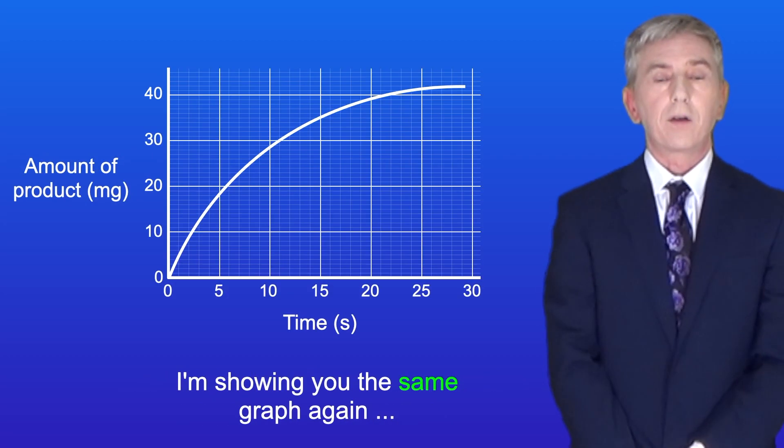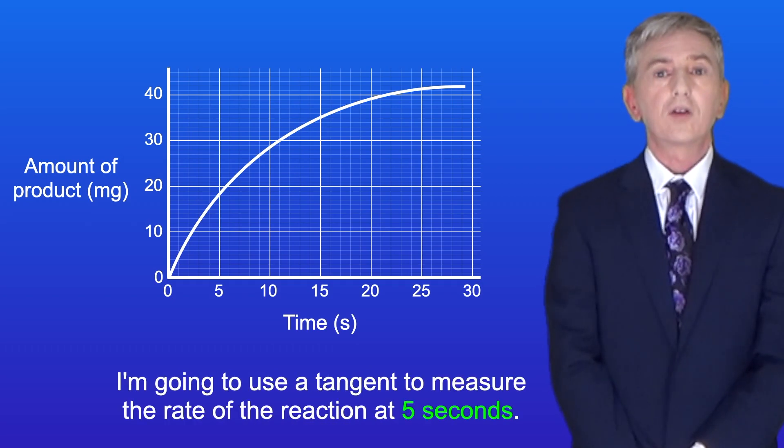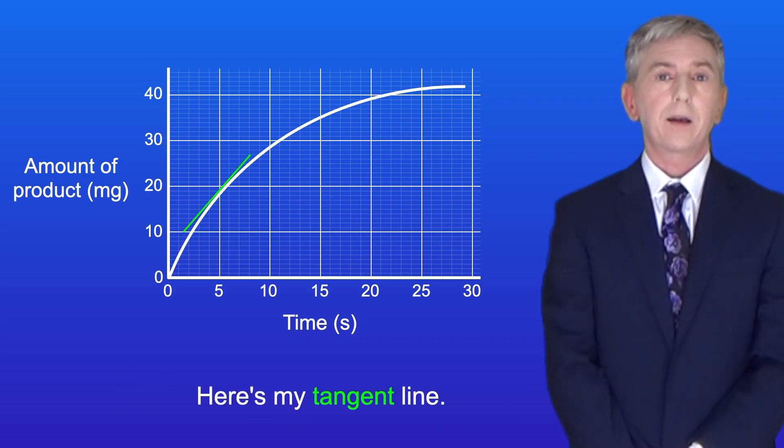I'm showing you the same graph again, but this time I've put numbers on the axes. I'm going to use a tangent to measure the rate of the reaction at 5 seconds. So here's my tangent line.